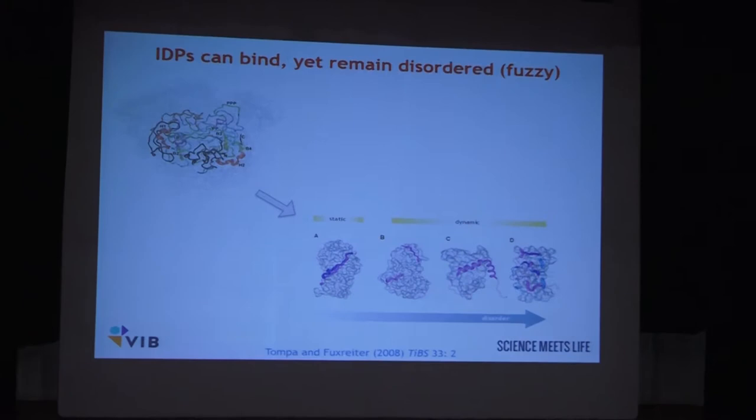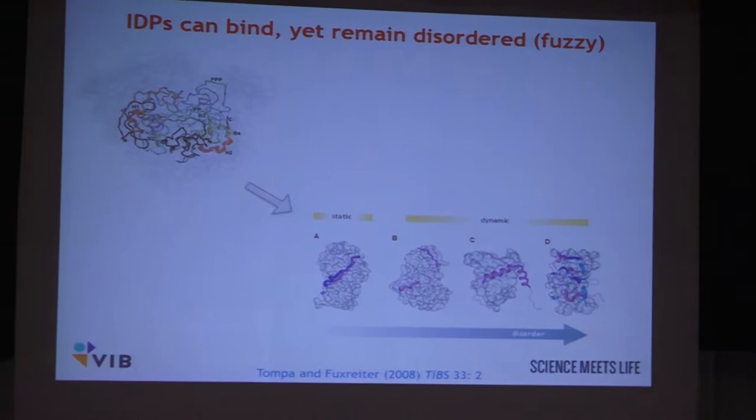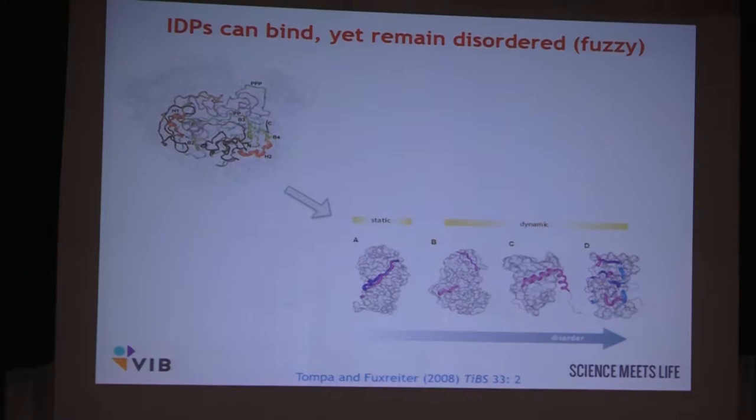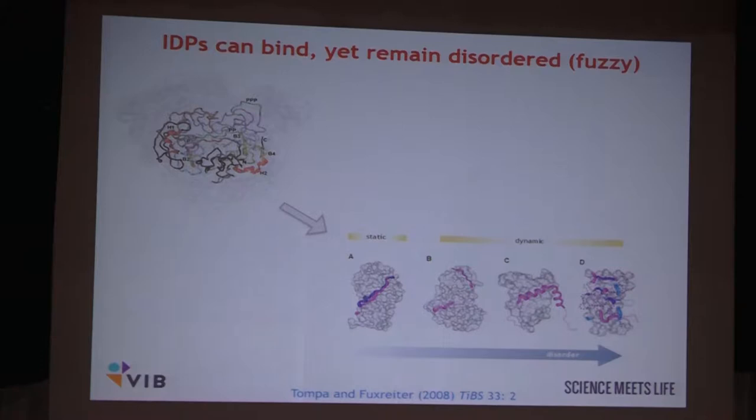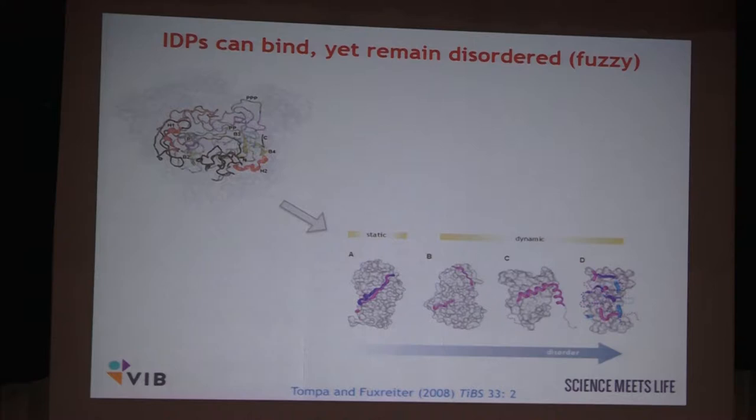The second thing, which Volodya mentioned already, is that we suggested with Monica a couple of years back that when IDPs function, they very often bind to other things — proteins, RNA, or other molecules — but very often they don't undergo a full disorder-to-order transition. They can remain partially or even completely disordered. This is what we call fuzziness, and that's also something that shows up in the phase separation field.